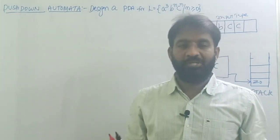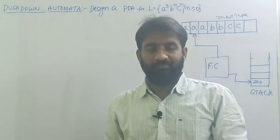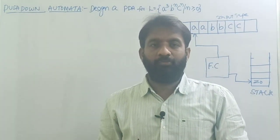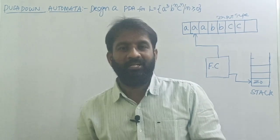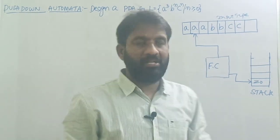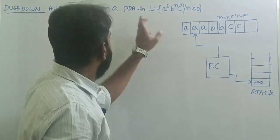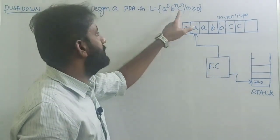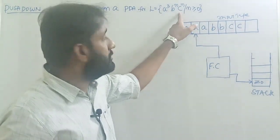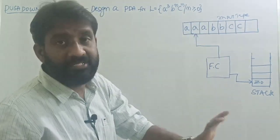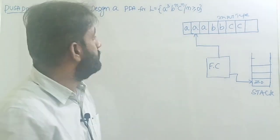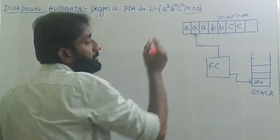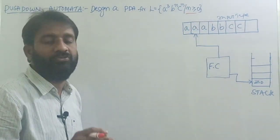Welcome back. Today's topic is how to design a pushdown automata for the language L equals A power 3, B power N, C power N, such that N is greater than or equal to 0. This condition N ≥ 0 is most important.